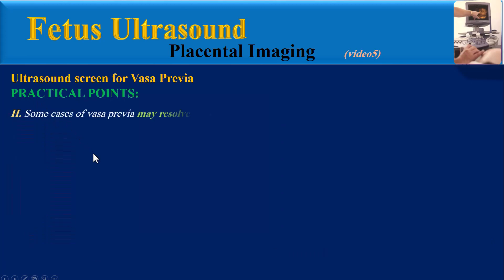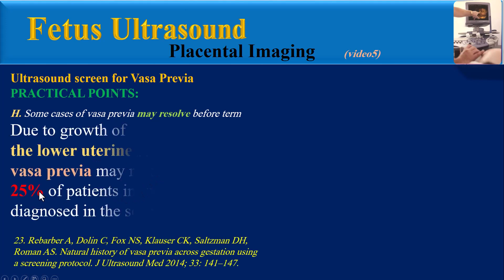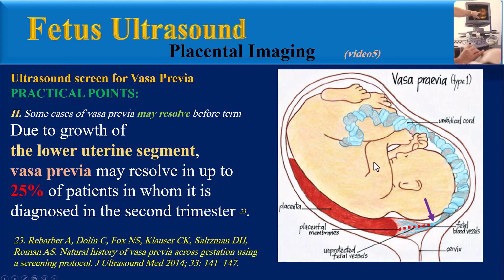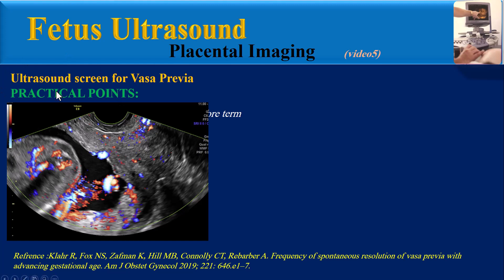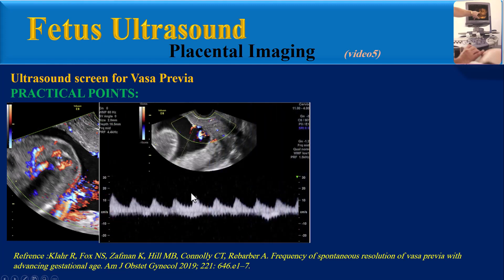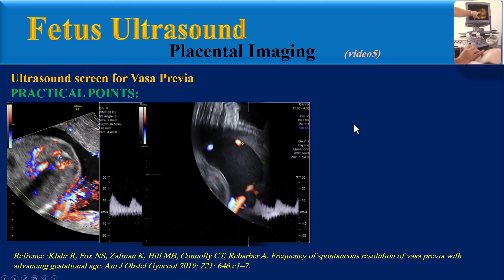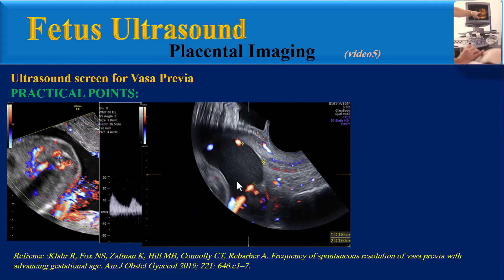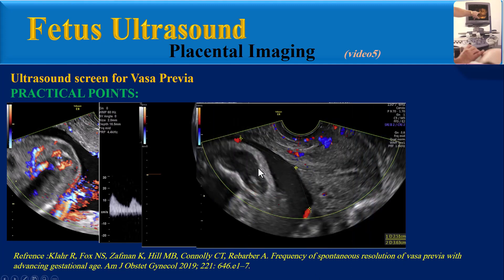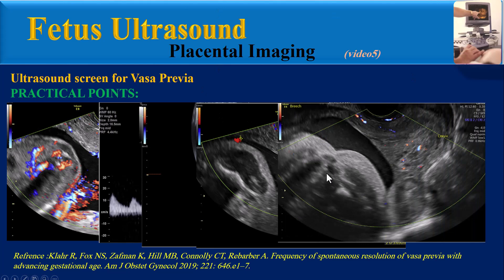Another practical point: some cases of Vasa Previa may resolve before term. Due to growth of the lower uterine segment, Vasa Previa may resolve in up to 25% of patients in whom it is diagnosed in the second trimester. A color Doppler image at 20 weeks gestation shows Vasa Previa overlying the internal cervical os, confirmed with pulsed wave Doppler showing fetal cardiac rate. At 27 weeks, migration of fetal vessels from the internal os is visible, and at 30 weeks further migration is seen.